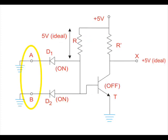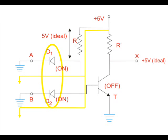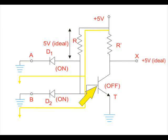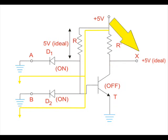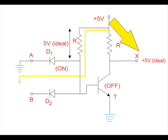When both inputs A and B are given with 0V, both diodes are in forward bias condition, i.e., in ON condition. The supply voltage gets passed to ground through diodes D1 and D2. The entire supply voltage of +5V will ideally drop across resistor R, and hence the base terminal of transistor T will not get enough potential to turn on, so the transistor will be in OFF condition. As a result, the supply voltage +5V will appear at output terminal X, and hence output X will become HIGH or logical 1. If either of diodes D1 or D2 is applied with 0V, the same thing happens, and in those cases also the output will be logical HIGH or 1.